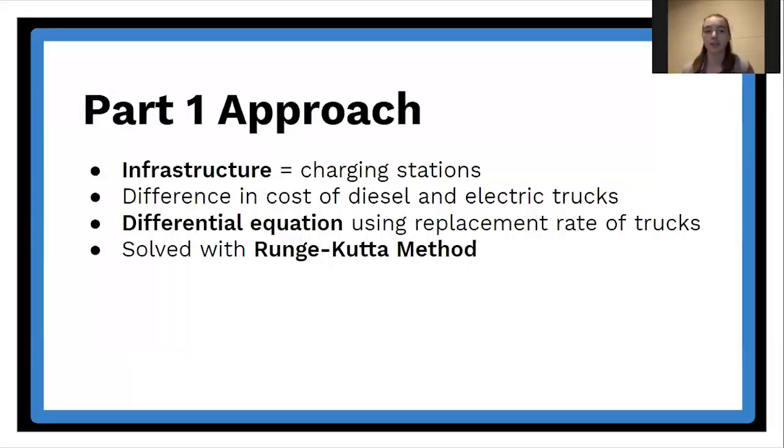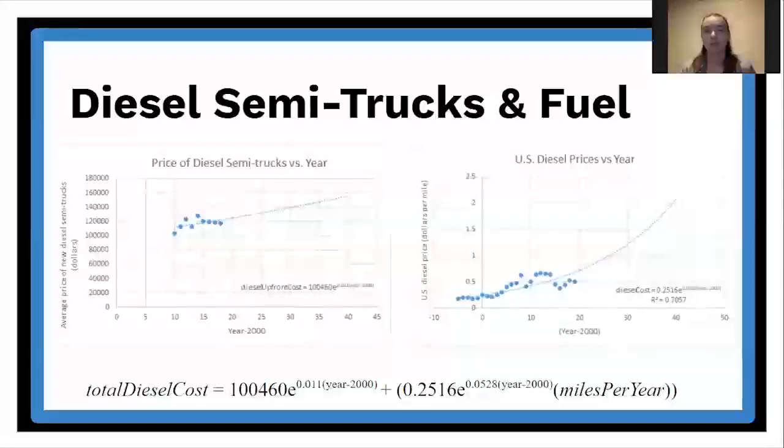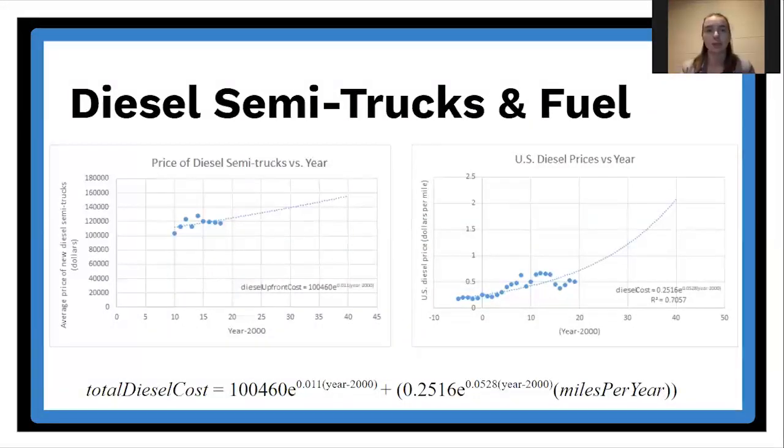In part one, we were asked to predict how many electric semi trucks will be on the road in 5, 10, and 20 years. To tackle this problem, we applied extrapolated data to create a model for the demand of electric trucks, further relating this to the amount of electric trucks on the road through a differential equation. In order to find the difference in the cost of diesel and electric semi trucks, we first had to model the costs for each type of truck. For simplification purposes, we only modeled the cost of purchasing a truck and the cost of fuel. We assumed all other variables would be similar between electric and diesel semi trucks. This is a reasonable assumption because most other costs would differ based on location and type of route, not type of truck.